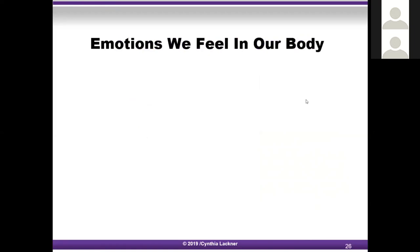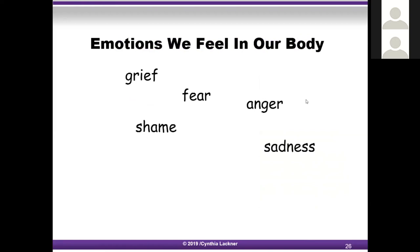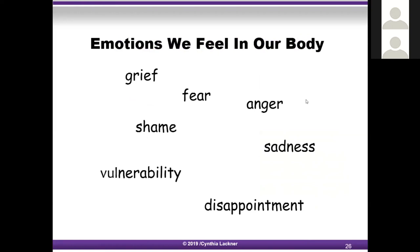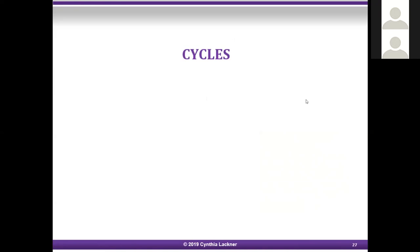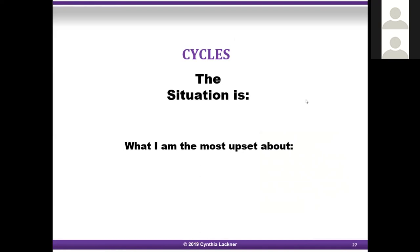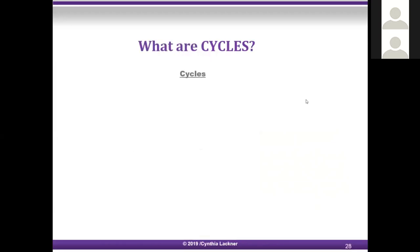Emotions we feel in our body include grief, fear, anger, shame, sadness, vulnerability, and disappointment. As you learn more about yourself, you will notice these are certain feelings you feel in your body even more sometimes than you feel in your mind. Now I'm going to go over a tool with you called cycles. The first thing you would think of is something that's really upsetting you — possibly at work — and you write down 'the situation is...' and then 'what I'm most upset about.' This can change hourly and daily, and you do this every single time you're upset.